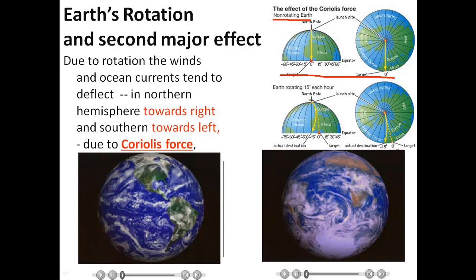As we know, the Earth is not stationary — it is in constant rotation, covering every 15 degrees of longitude in one hour. As you can see on the cross-section side view, if a bullet is fired from the launch site, it is supposed to reach the target in a straight line. However, from the North Pole toward the equator from the zenithal view, the dotted yellow line is the intended path. But due to the rotational frame of the Earth and the curvature of the Earth, the object tends to bend toward the right in the Northern Hemisphere.